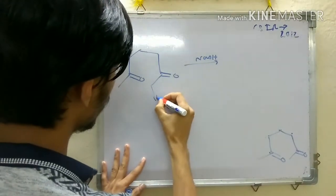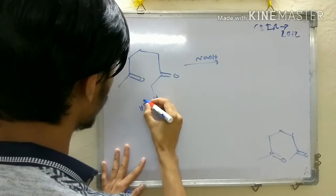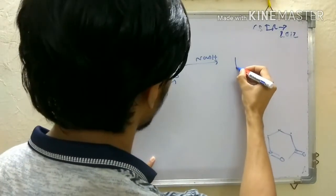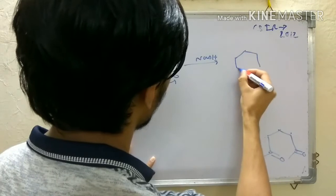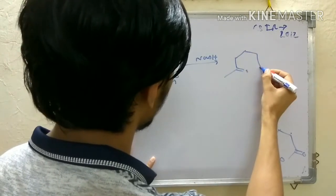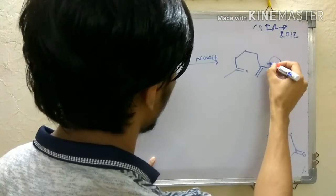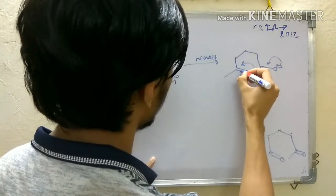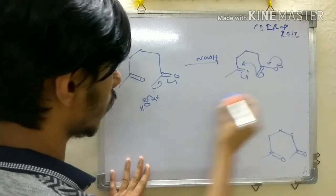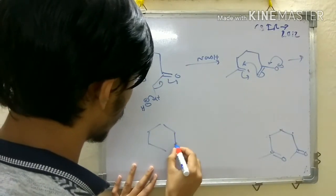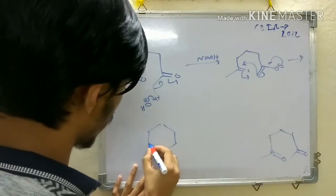OH minus will take this proton, regenerating this enolate. Now it can attack here, and that's why you'll get this.